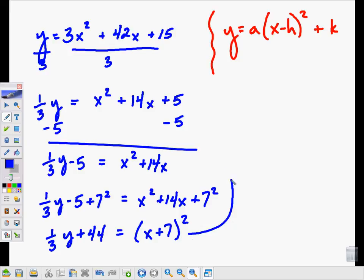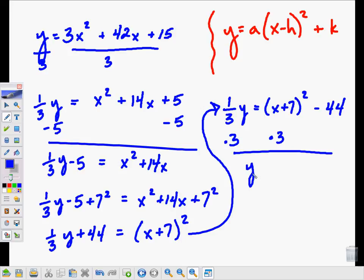We're almost there, almost home. I'm going to subtract the 44 from both sides, so 1 third y equals x plus 7 quantity squared minus 44, and then multiply both sides by 3 so that my y term is by itself. So I've got y equals 3 times x plus 7 quantity squared minus 3 times my 44, and that little bit of mental math leaves me with y equals 3 times x plus 7 squared minus 132.